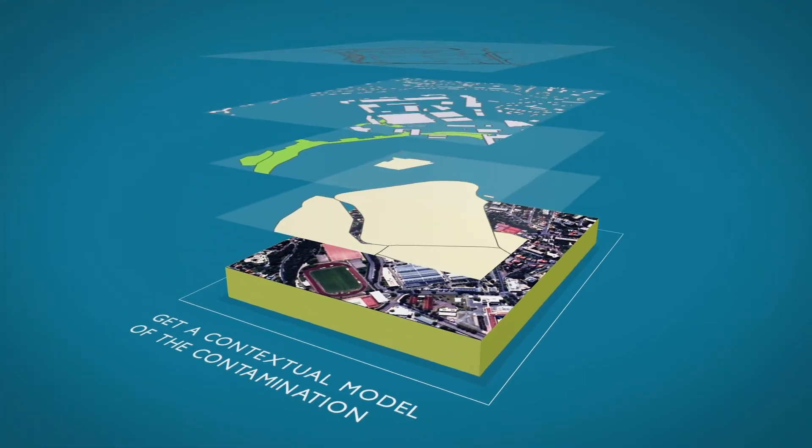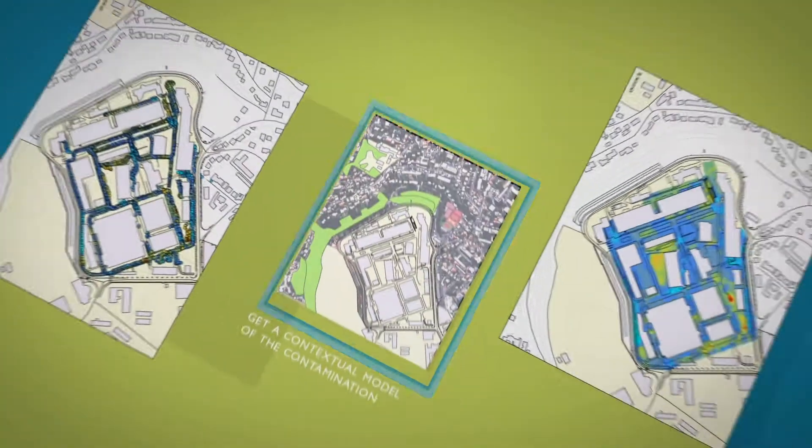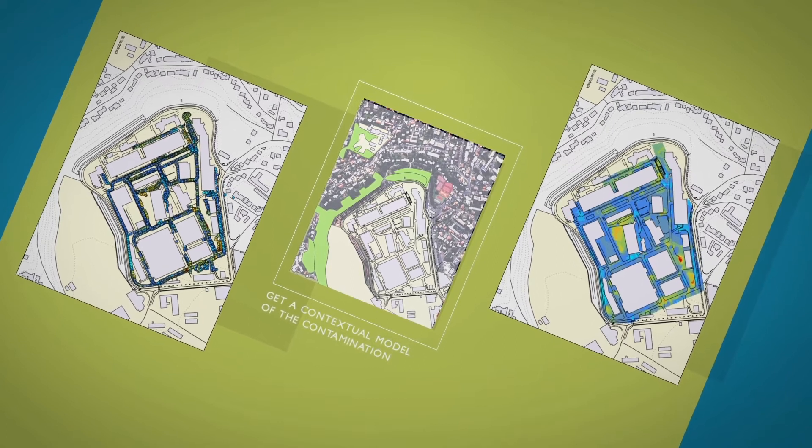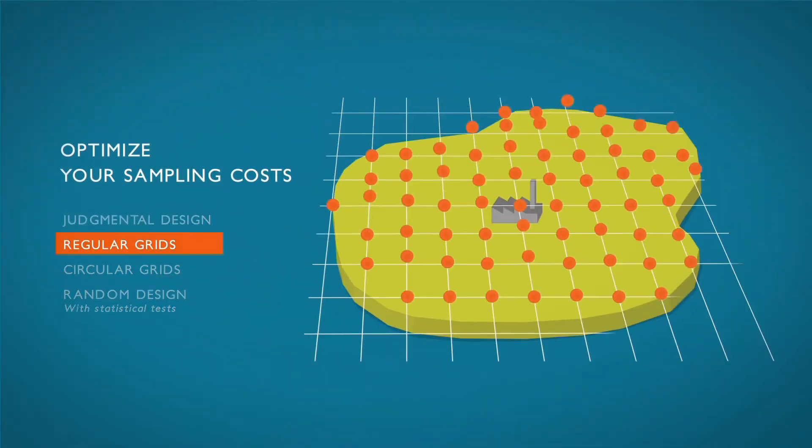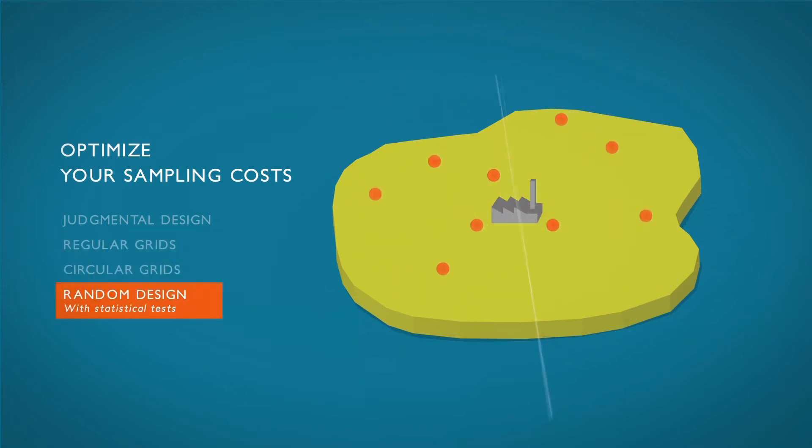Cartotrack is based on a geographical information system. Cartotrack offers tools to design sampling plans in an optimal way based on regular grids or random pattern.